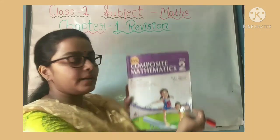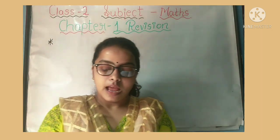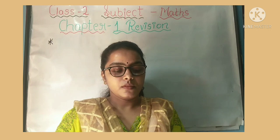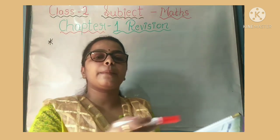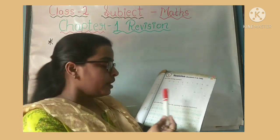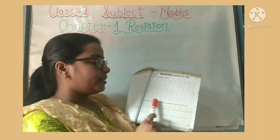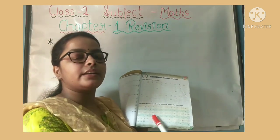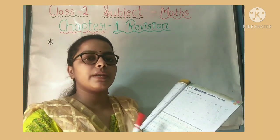Let's start — hurry up, open your page number 7. You can open your book. You can purchase this book. Open your Chapter Number 1 at page number 7 — Revision, Numbers 1 to 100, fill in the missing numbers. What you have to do is fill in the missing numbers, 1 to 100. Then come to the next: fill in the missing numbers by counting forward or backward. You have to do these two exercises in your books.